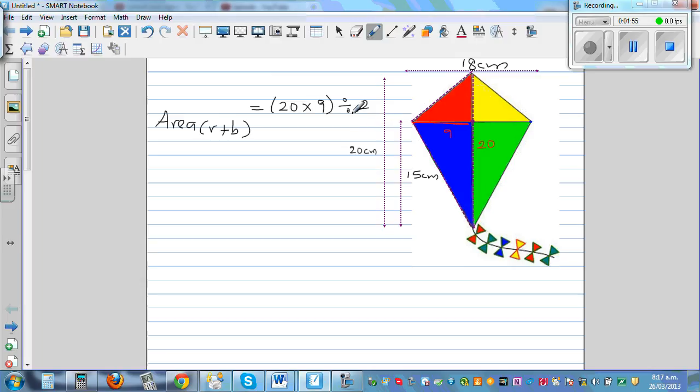Area of triangle, I remember like this: area of a rectangle is base times height. So this is base times height divided by 2, which is 180 divided by 2, which is 90 centimeter squared.